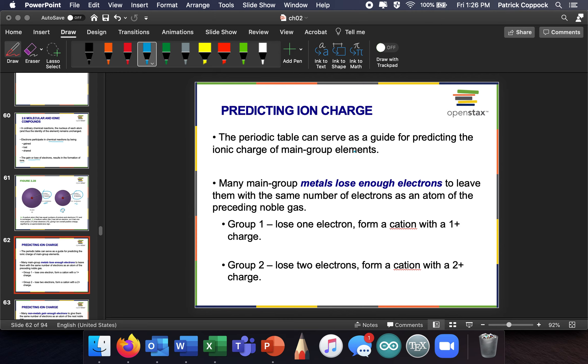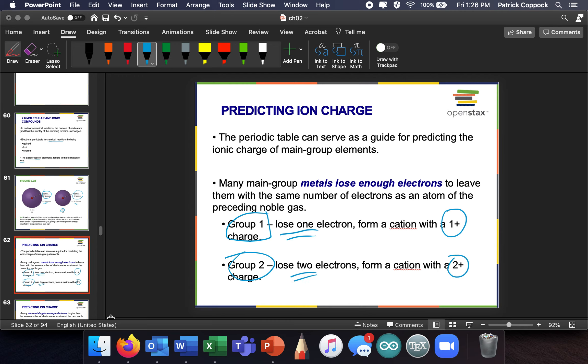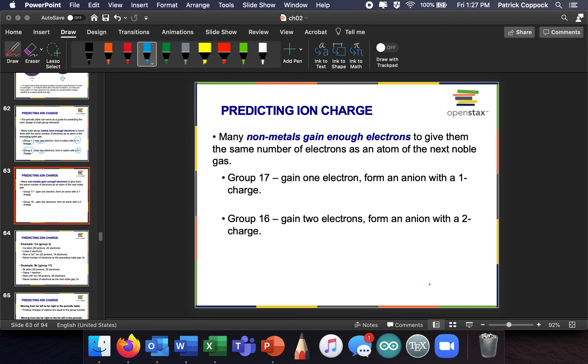The periodic table can serve as a guide for predicting the ionic charge of main group elements. Group ones typically lose one electron, and they become a plus one. This is cool, right? Group one becomes plus one. Group two, they typically lose two to form a cation with a plus two charge. Many nonmetals gain electrons. That's the other side of the periodic table. So group 17, that's the halogens, they typically gain one electron, and they end up with a charge of minus one.